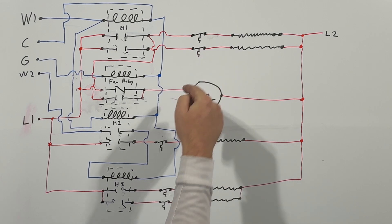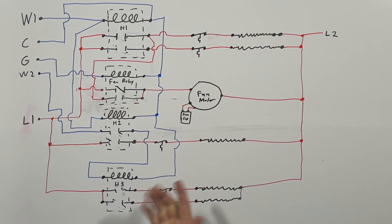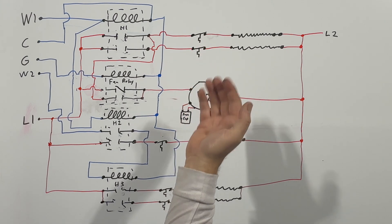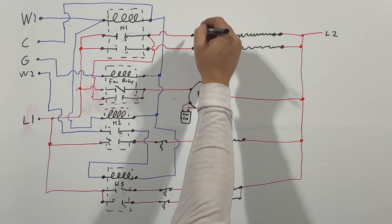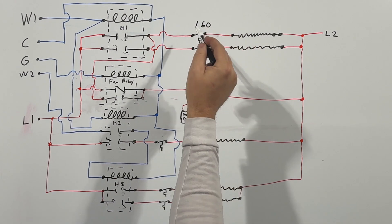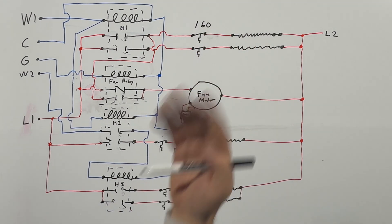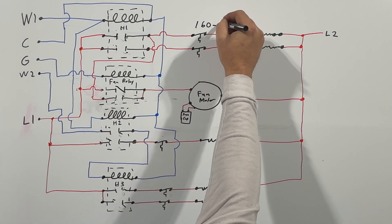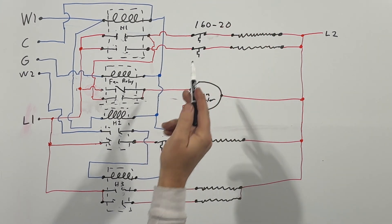This is pretty much your normal setup, and then keep in mind every single element will have a high limit or a temperature switch. So if it gets too hot, it will open on rise. So I think in this case these were 160 degrees on rise, so basically if they reach 160 degrees they pop open.